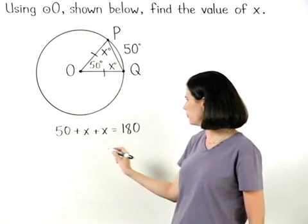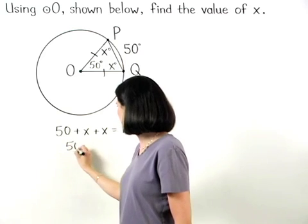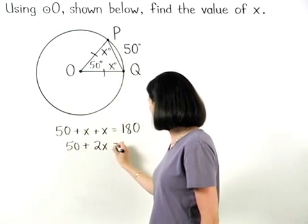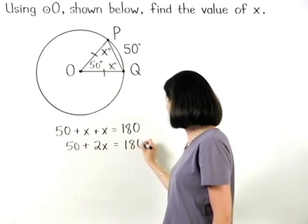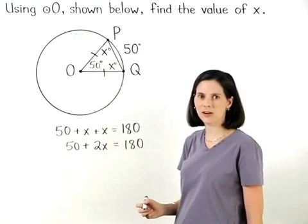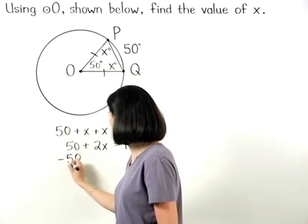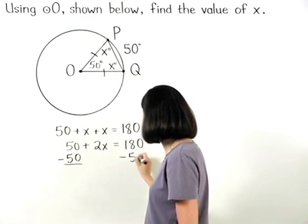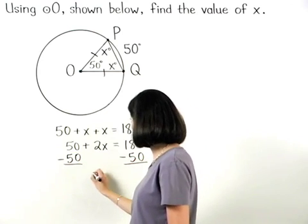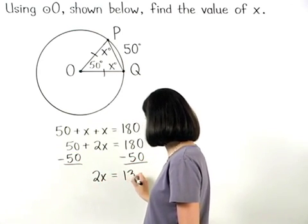This simplifies to 50 + 2x = 180. Solving from here, we subtract 50 from both sides to get 2x = 130.